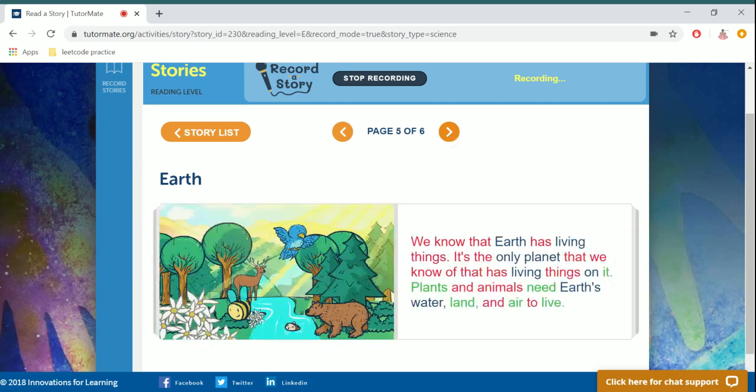We know the Earth has living things. It's the only planet that we know of that has living things on it. Plants and animals need Earth's water, land, and air to live.